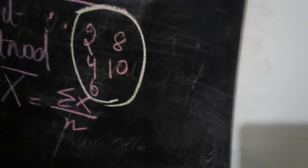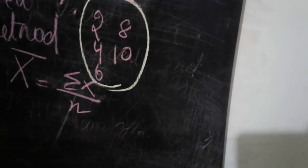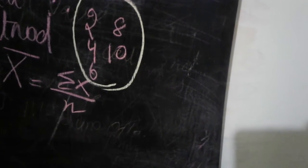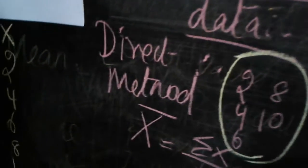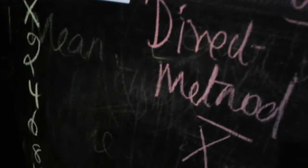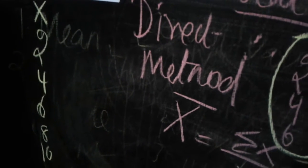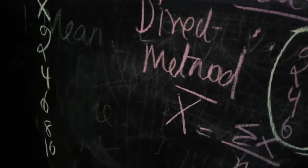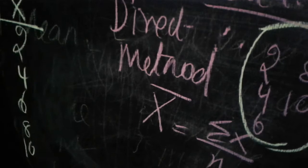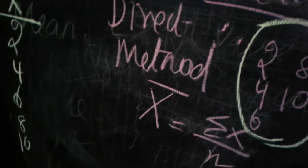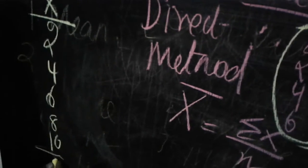Write down the x values given: two, four, six, eight, and ten. The direct method formula is x-bar equals sigma x divided by n. Now we calculate sigma x from these x values.